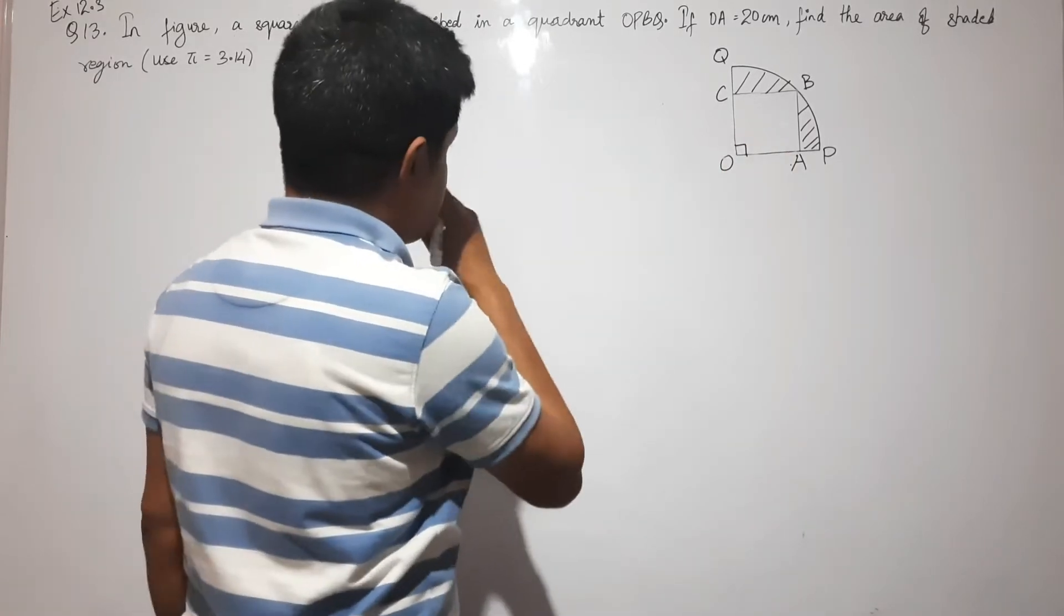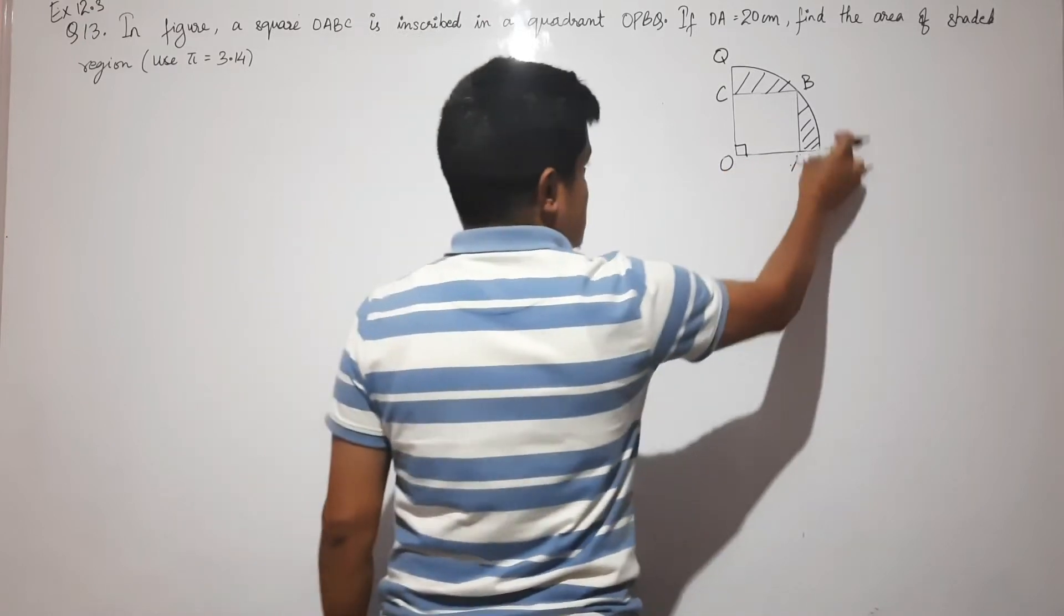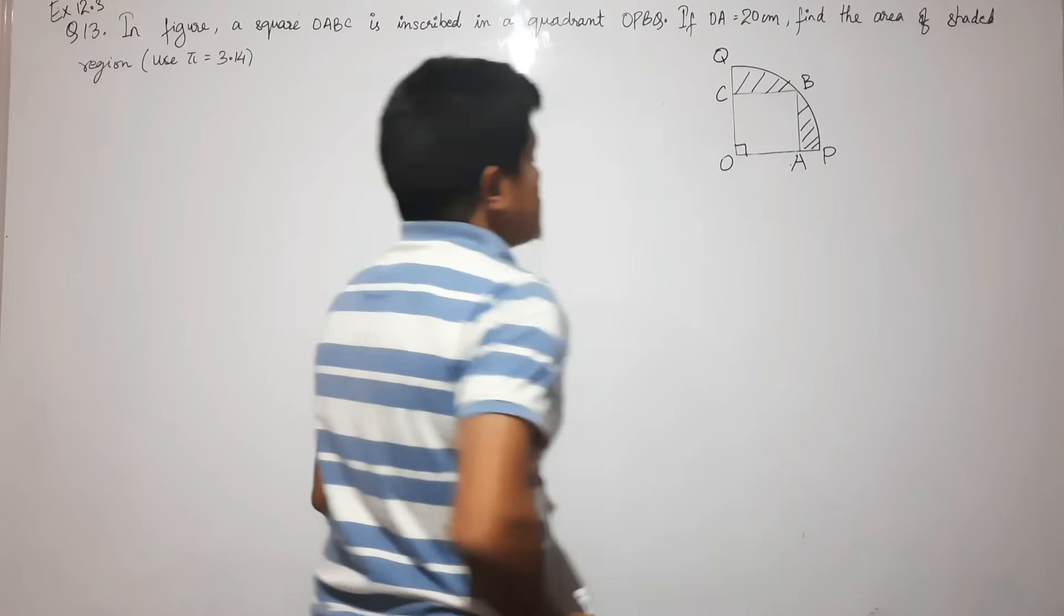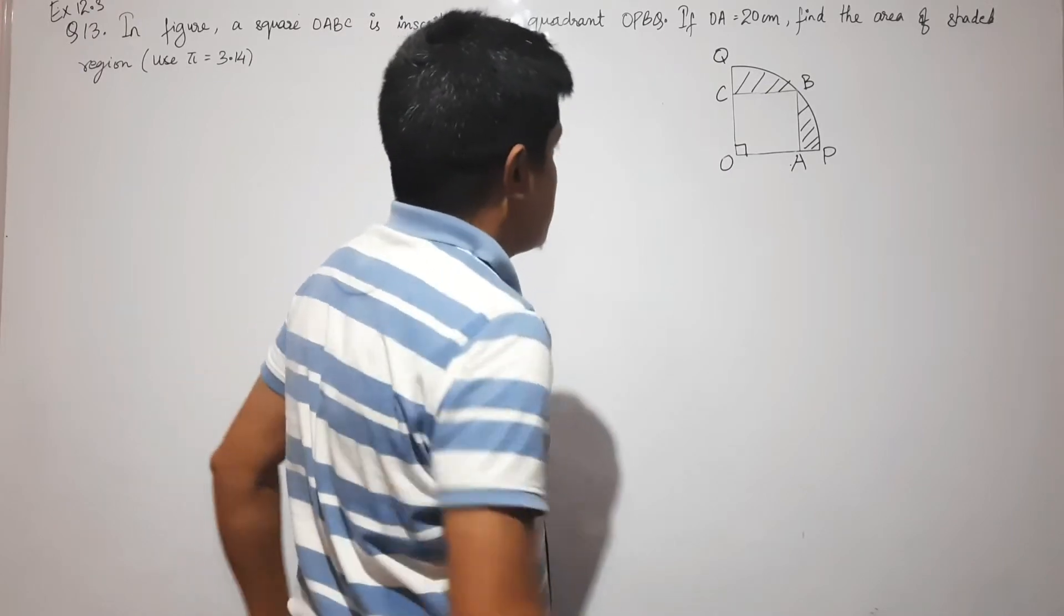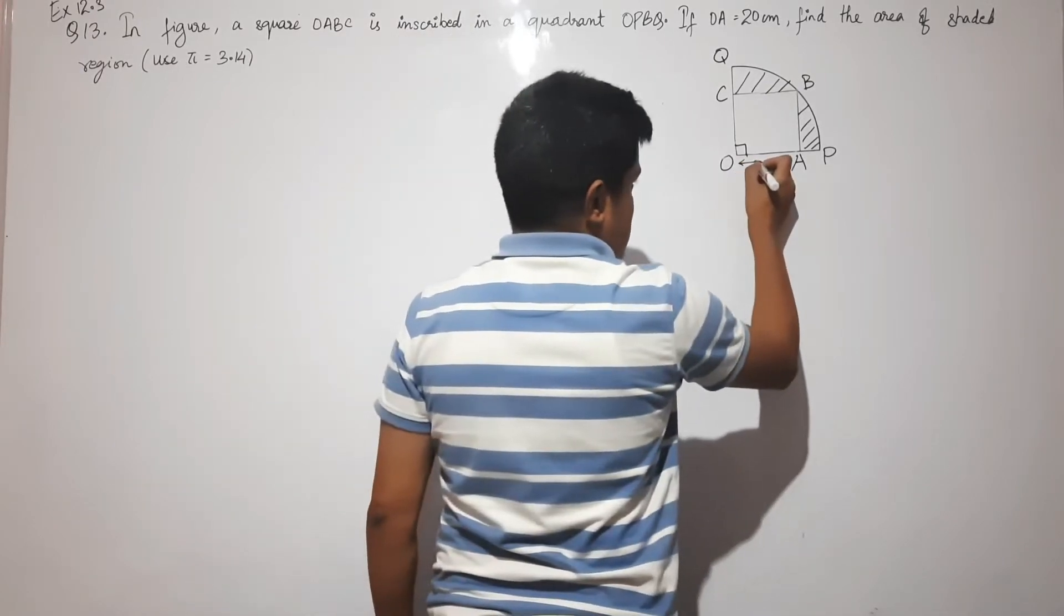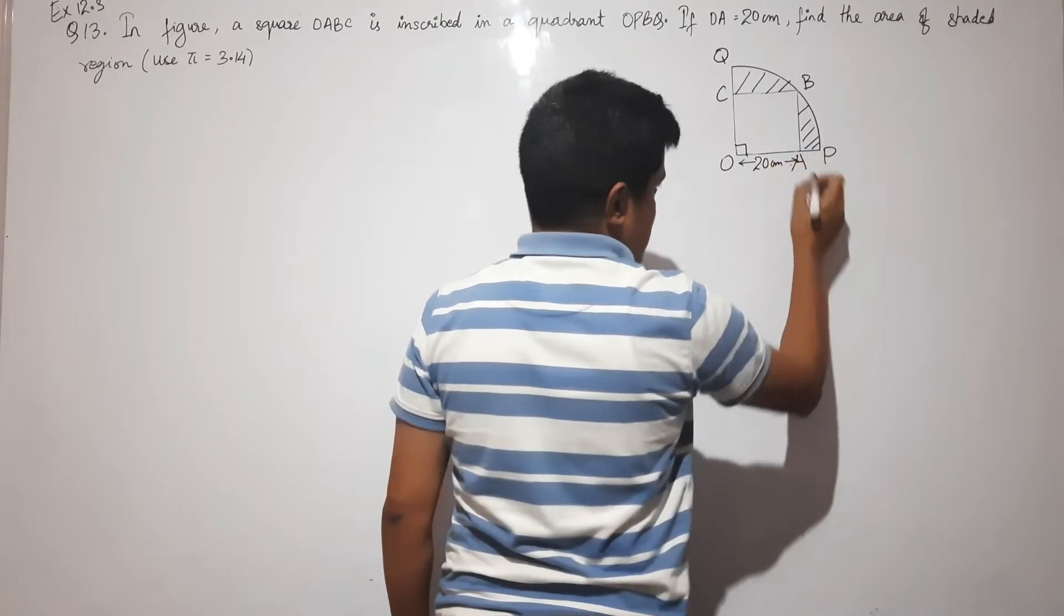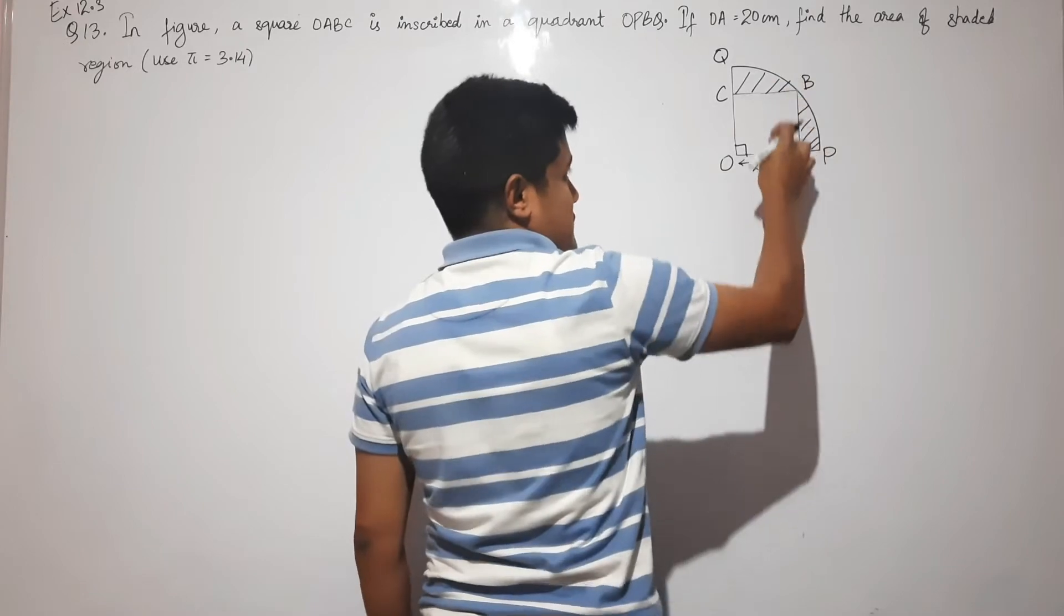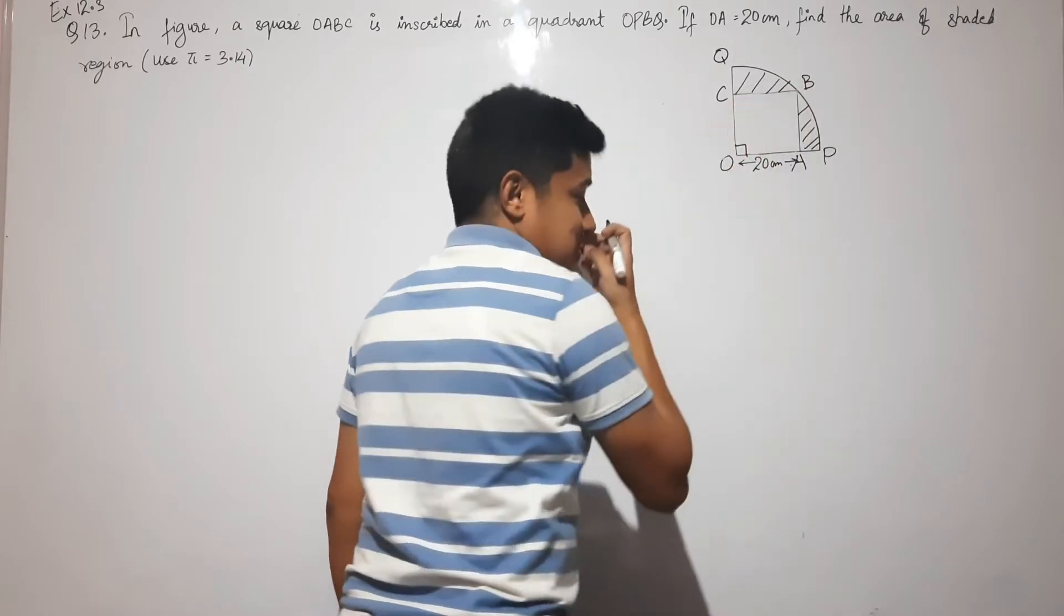The 90-degree quadrant is OPBQ. If OA equals 20 centimeters, then clearly the side of the square is 20, so all sides are 20 centimeters.